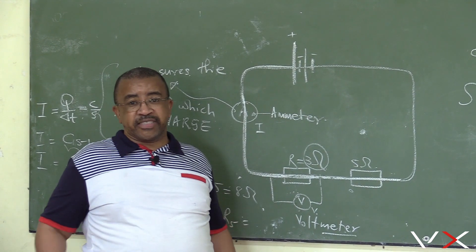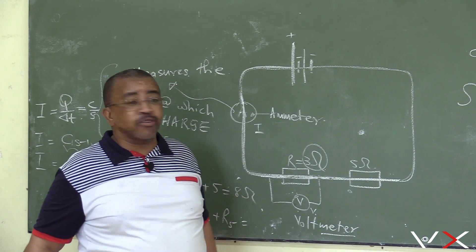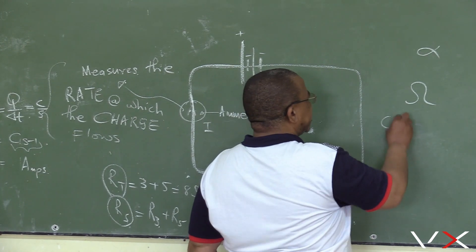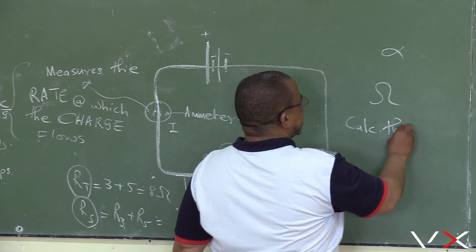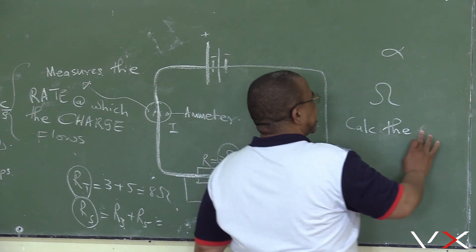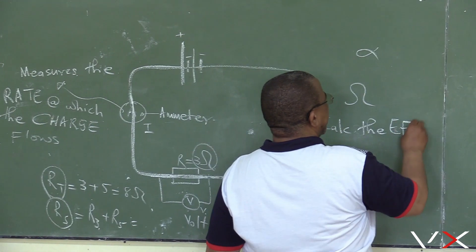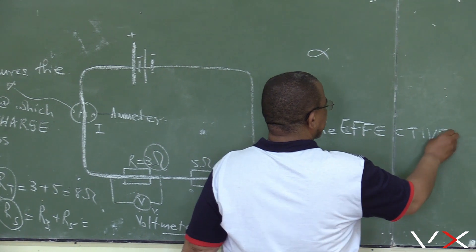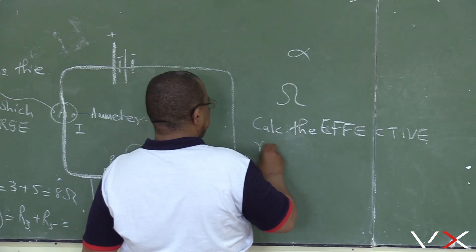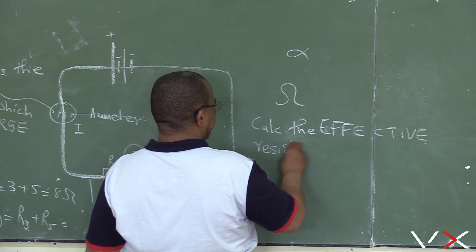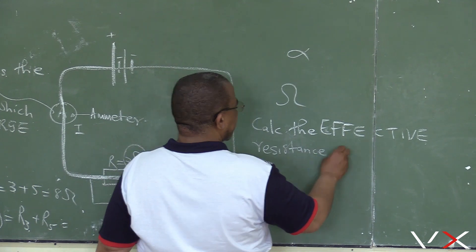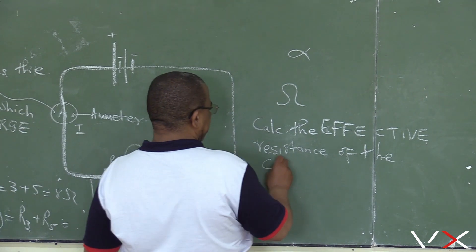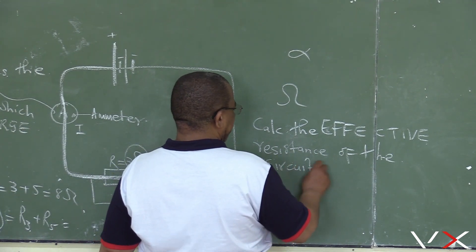Gui exam: but calculate — sinanama resistors are connected like this — but calculate the effective resistance of the circuit. The effective resistance of the circuit.